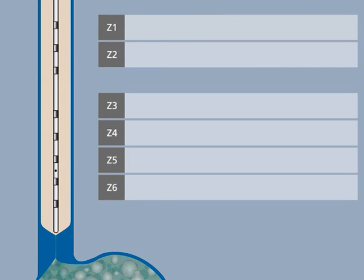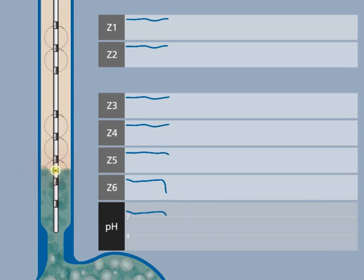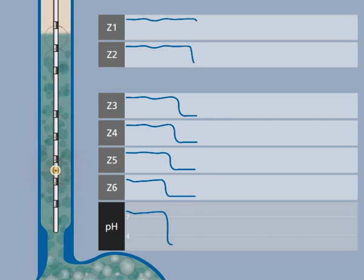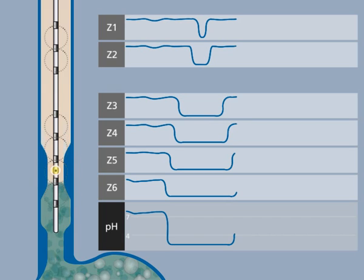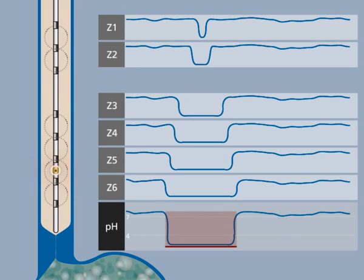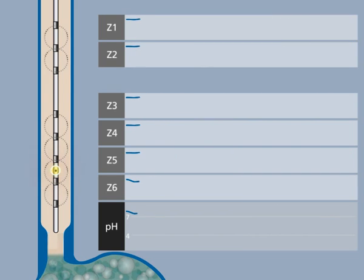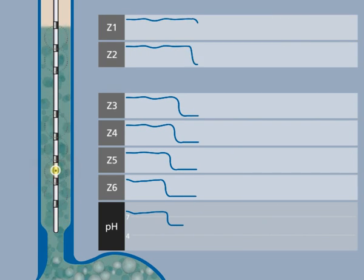The pH is measured with the pH sensor on the catheter. When the pH value is lower than 4, this is an acidic reflux episode. When the pH stays above 4, this is a weakly acidic reflux episode.